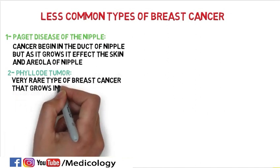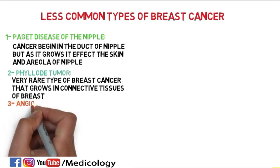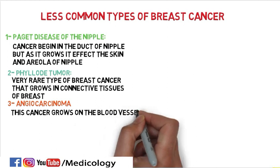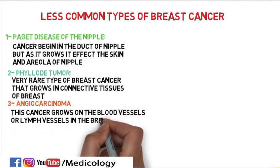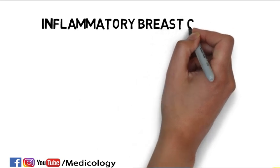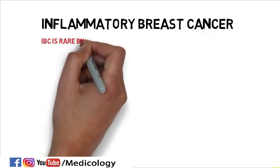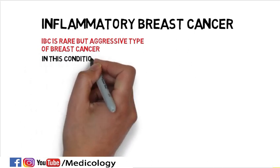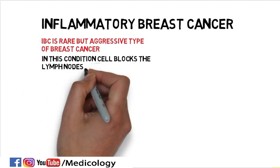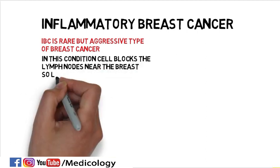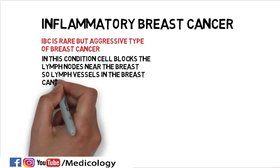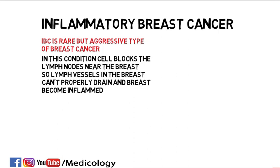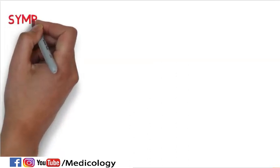Number two, phyllodes tumor — a very rare type of breast cancer that grows in the connective tissue of the breast. Number three, angiosarcoma — as the name suggests, this cancer grows on blood vessels or lymph vessels in the breast. Number four, inflammatory breast cancer (IBC) — a rare but aggressive cancer in which cancer cells block the lymph nodes near the breast, so the lymph vessels cannot properly drain, and the breast becomes inflamed, red, and swollen.